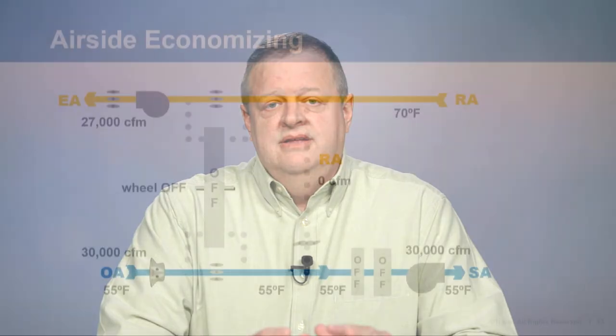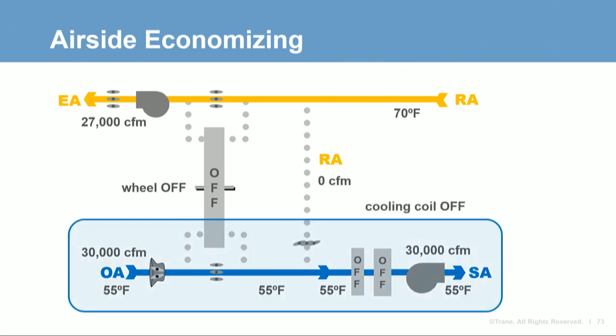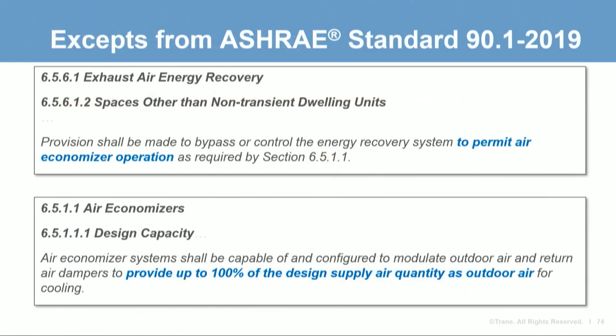If this system includes air-side economizing capability, it would likely be in economizing mode at mild conditions — the outdoor damper is fully open, the recirculating damper is closed, and all 30,000 CFM of supply air comes from outdoors with no mechanical cooling required. To accommodate economizer operation, bypass dampers are added to allow full economizer airflow without significantly increasing the air-side pressure drop and fan energy. This is part of the ASHRAE 90.1 requirements: if an economizer is required, the energy recovery system must include some provision to permit economizer operation.